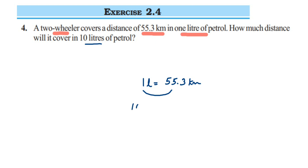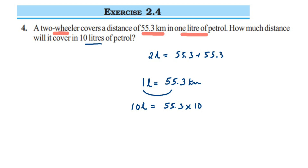For 10 liters, it will be 55.3 multiplied by 10. Why are we multiplying? For one liter it is 55.3; for two liters you add 55.3 two times; for three liters, three times — and so on. So instead of adding 55.3 ten times, we multiply 55.3 by 10 to get the same answer.